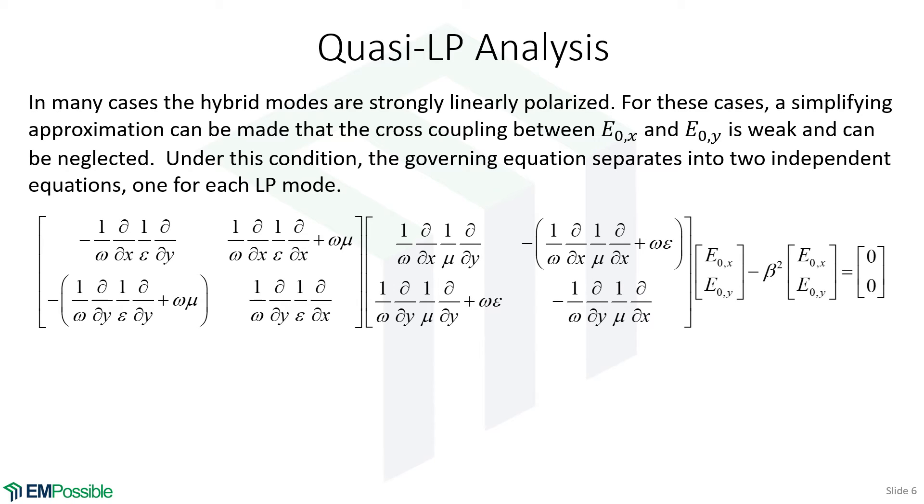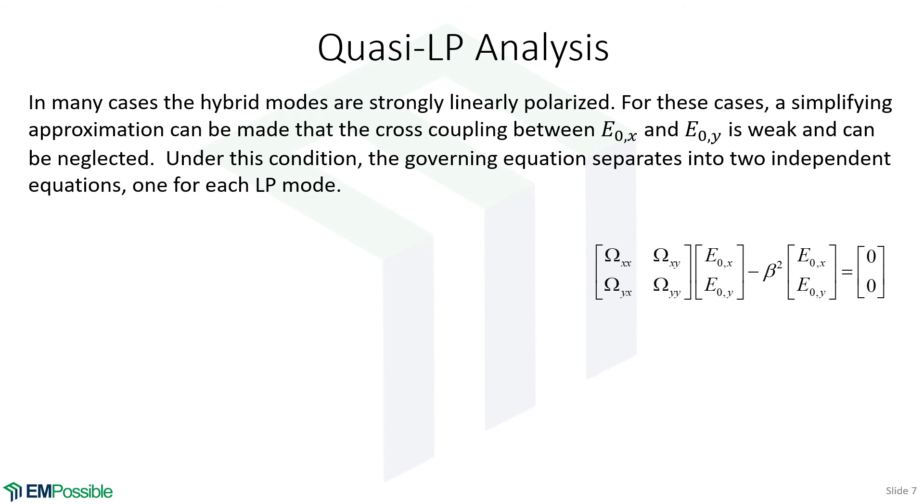What we have is a 2 by 2 matrix multiplying another 2 by 2 matrix. So we can multiply these two matrices together and get a bunch of big, ugly expressions. Rather than write those big, ugly expressions, I'll just call these omega-XX, omega-XY, omega-YX, and omega-YY.